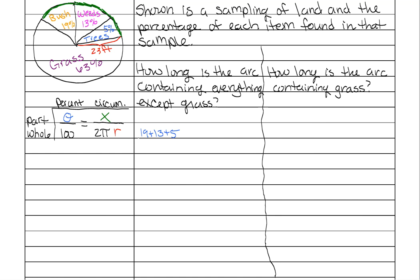So our percentage is the 19% plus the 13% plus the 5. And that's going to be over all 100%. We're trying to figure out how long that other portion is over our entire circumference. So 2π. And our radius is 23 feet.